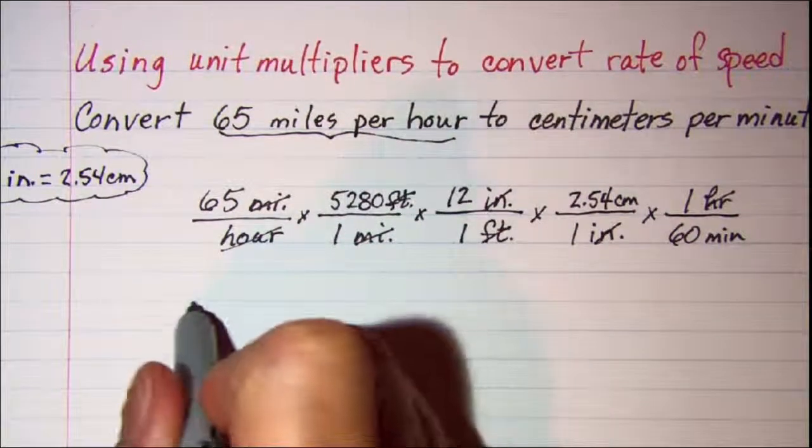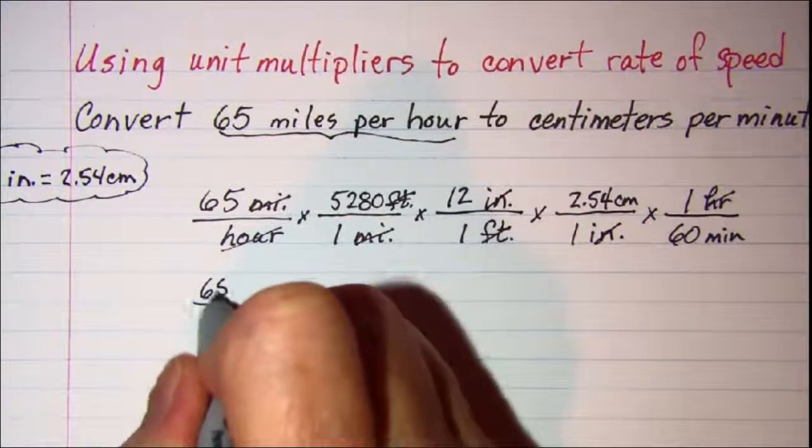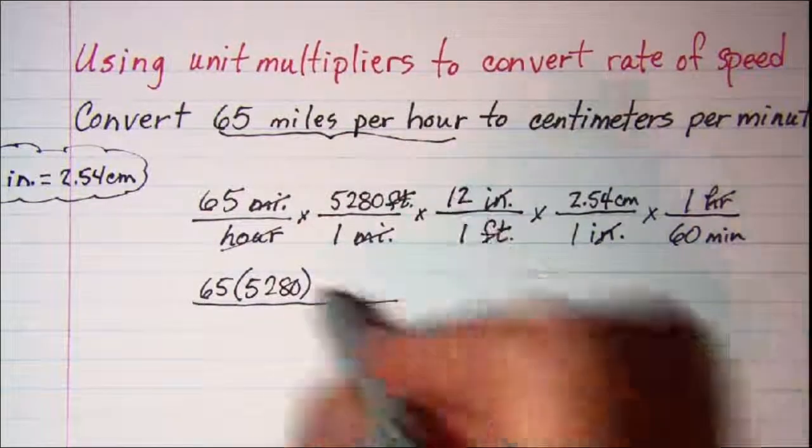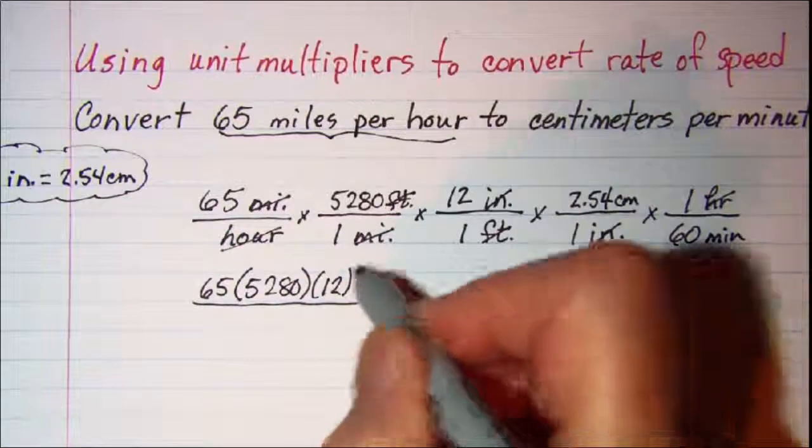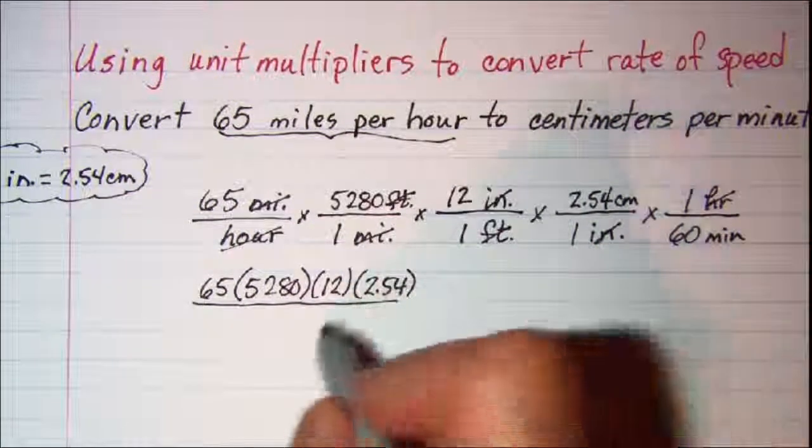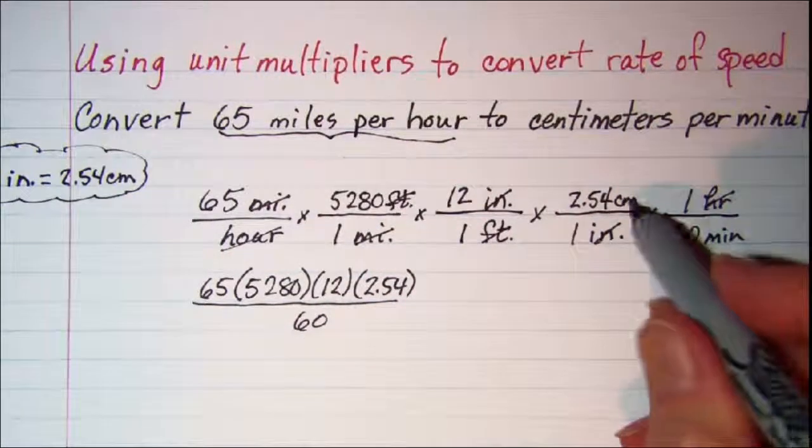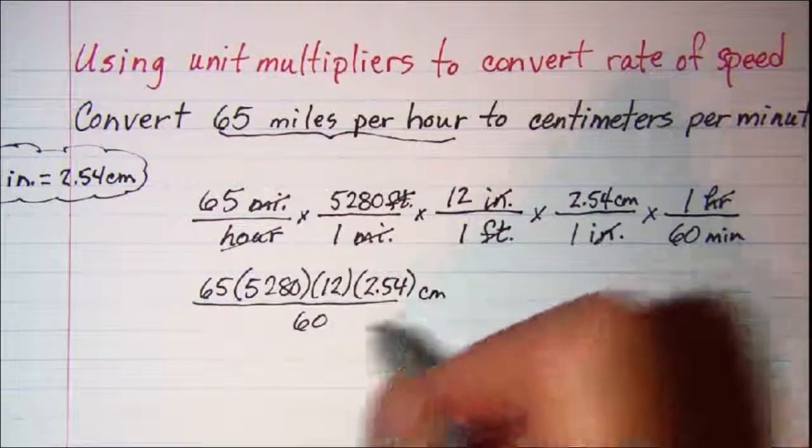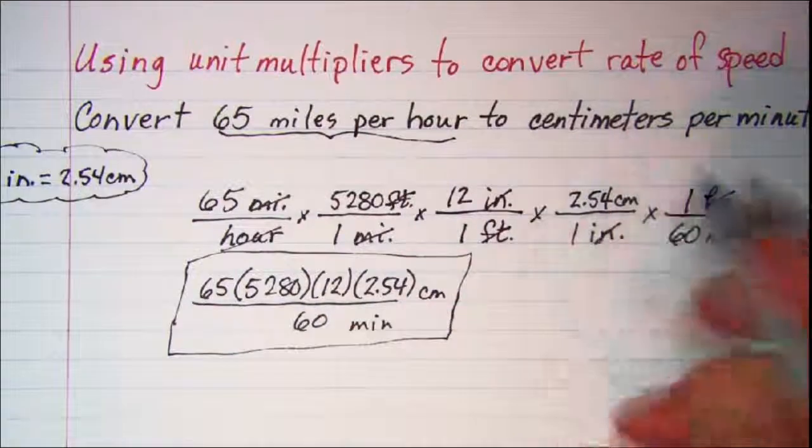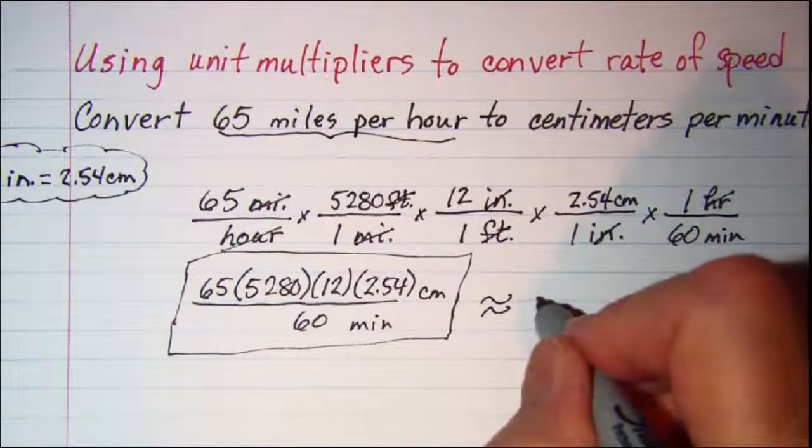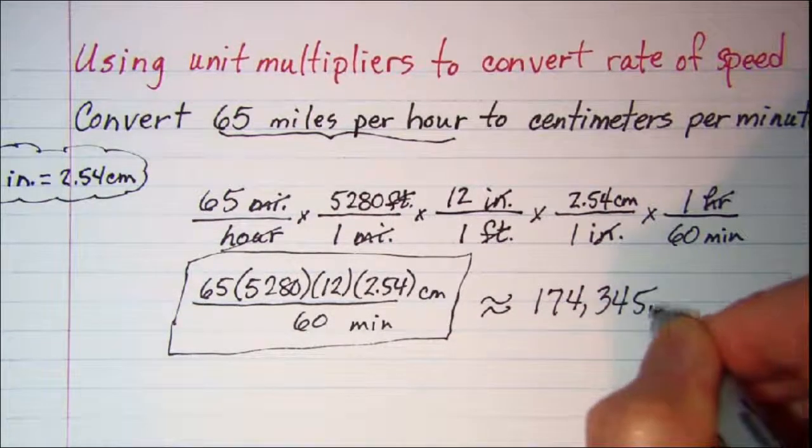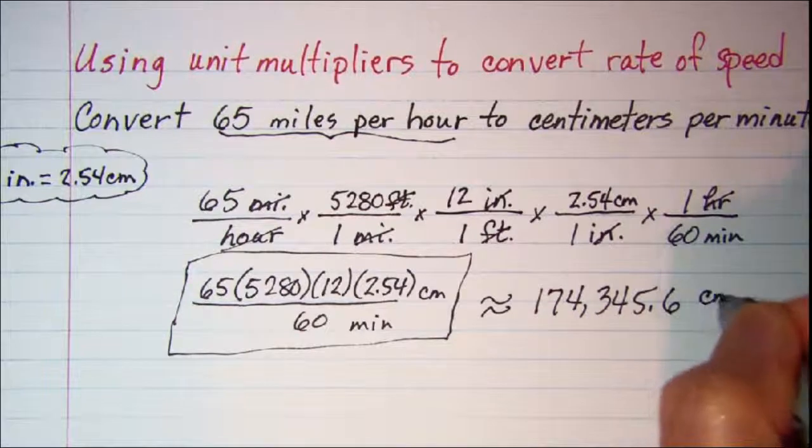So my answer, let me write it first with factors. I have 65 times 5,280 times 12 times 2.54 divided by 60 and that is centimeters per minute. I will box this in as an answer and if we put that in our calculator we get about 174,345.6 centimeters per minute.